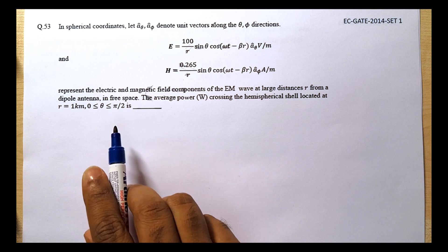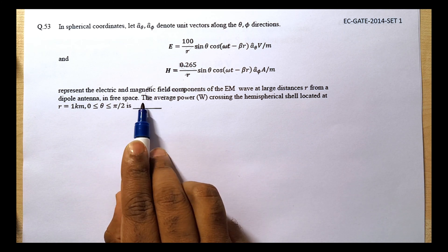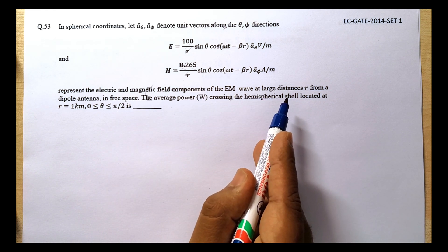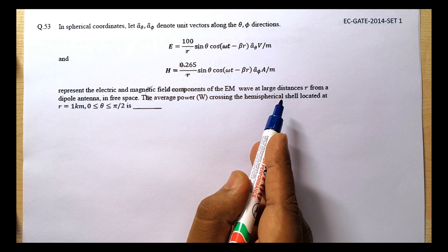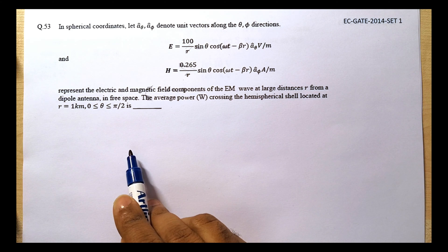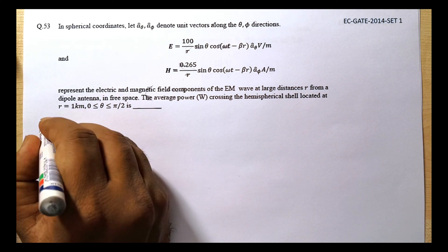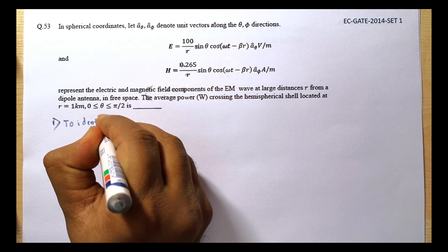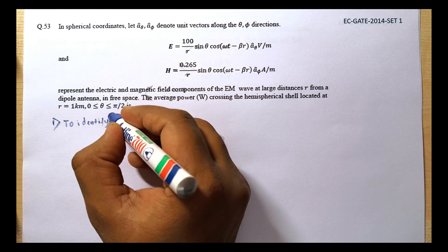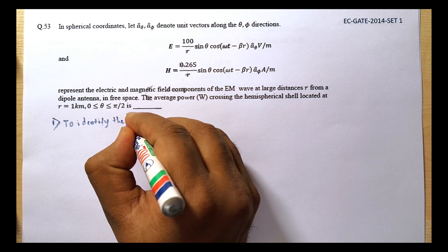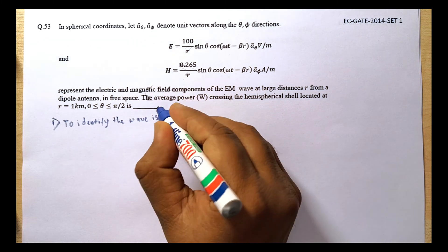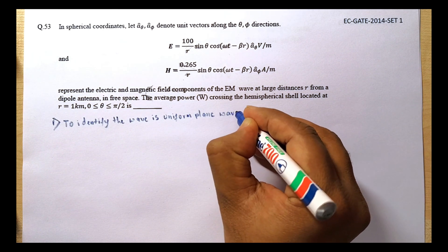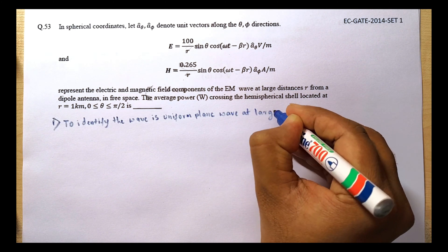Once you look at this question, it says the electromagnetic wave is at a large distance. So that means we can assume this electromagnetic wave is a uniform plane wave. That's the first thing to identify: the given wave is a uniform plane wave at large distance.